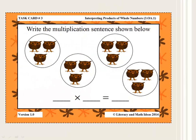In this task card, the student is asked to write the multiplication sentence shown below. To solve this problem, the student must first determine that there are four groups — one, two, three, and four. Next, the student must determine that there are three objects in each group.